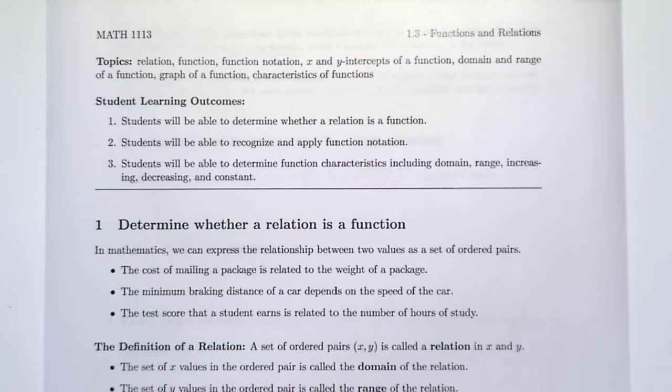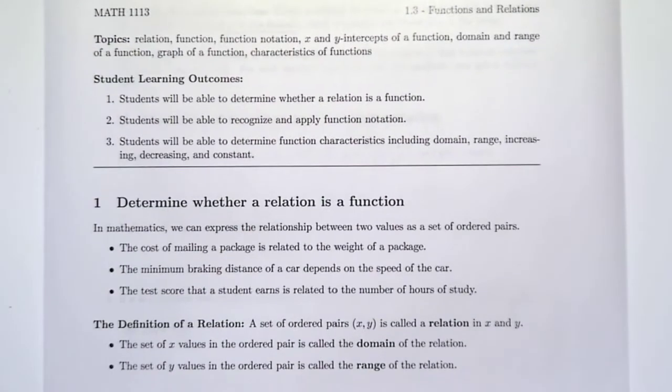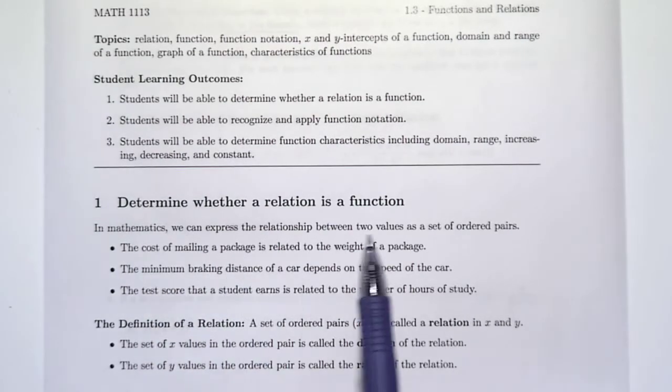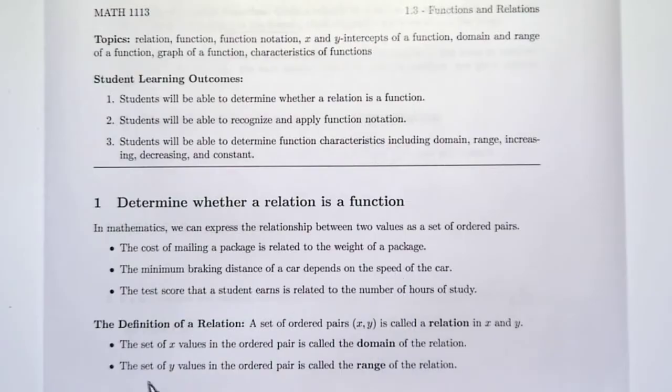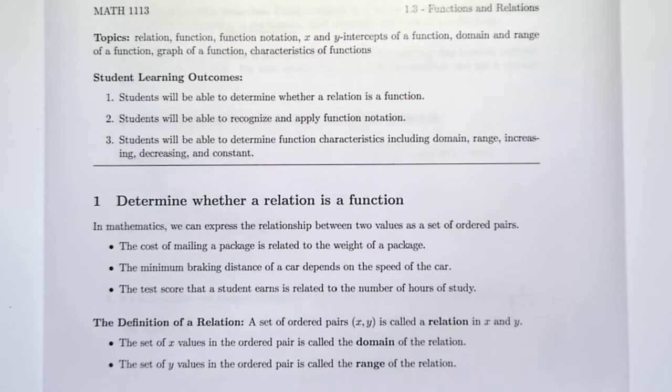In this first section we're going to determine whether a relation is a function. So let's first talk about what a relation is in the real world, then talk about the mathematical definition. In math we can express the relationship between two values as a set of ordered pairs. We can talk about the relationship between two things like the cost of mailing a package and the weight of the package, the minimum braking distance of a car and the speed of a car, or a student's test score related to the number of hours they study.